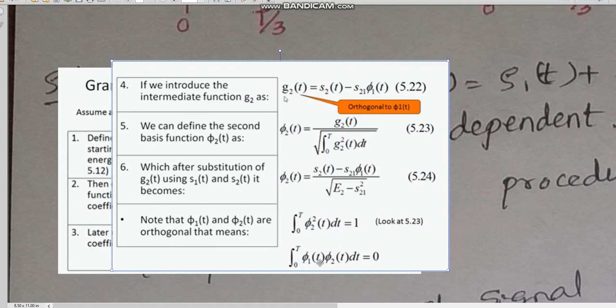The energy is unity and Phi1 and Phi2 are assumed to be orthonormal. Based on that, we arrive at this result. Now we have got two orthonormal basis functions. Since we have got four signals, there might be more than two orthonormal basis functions.